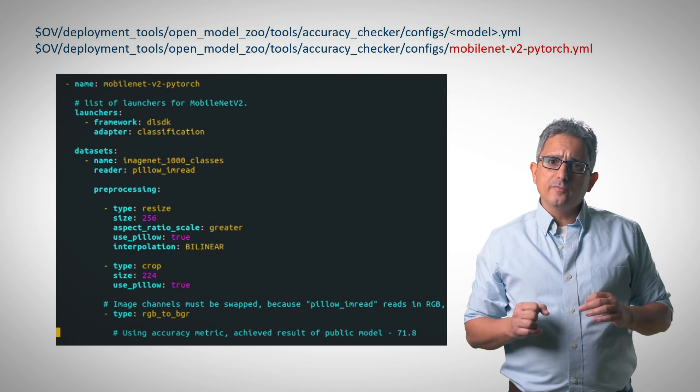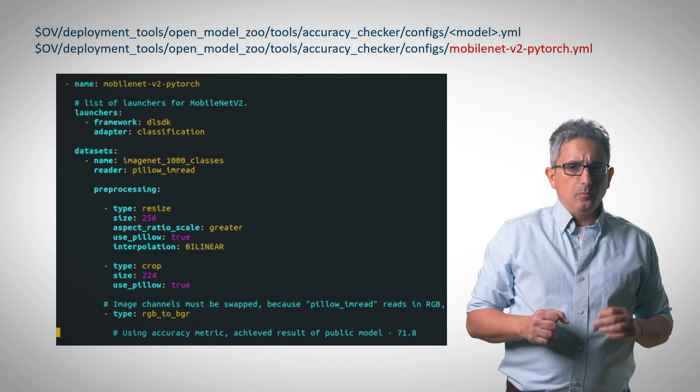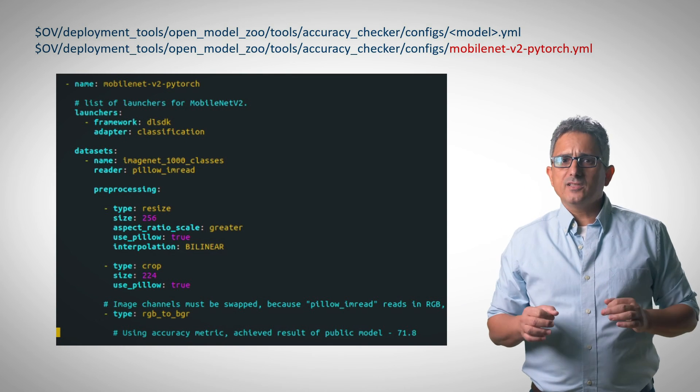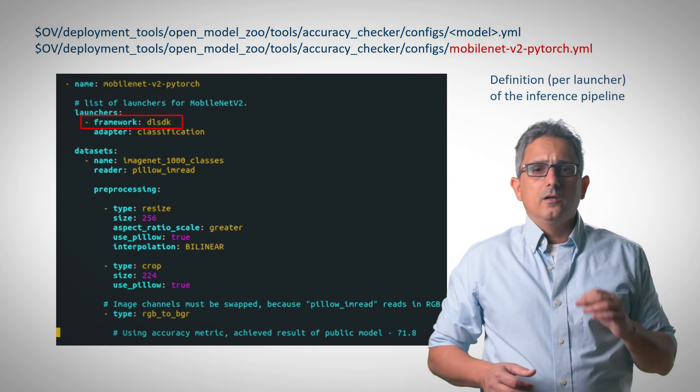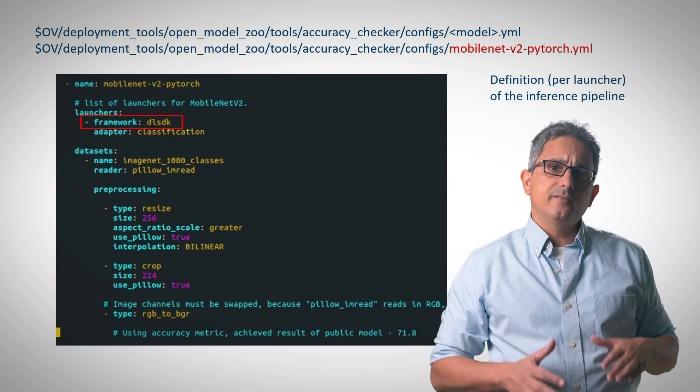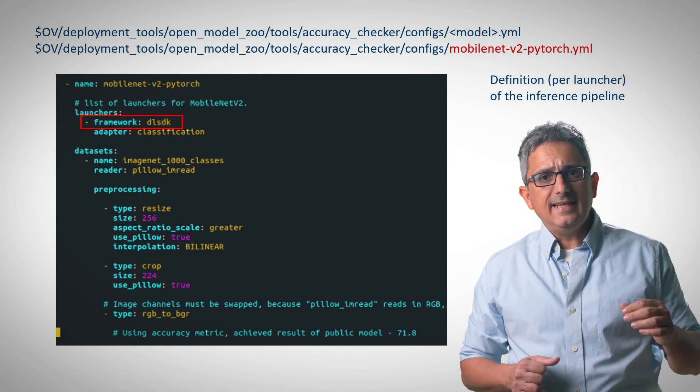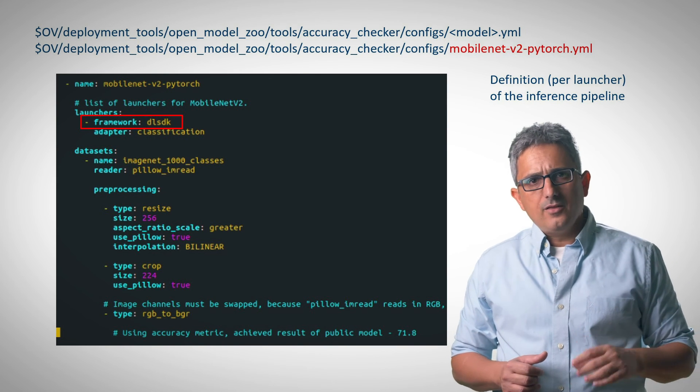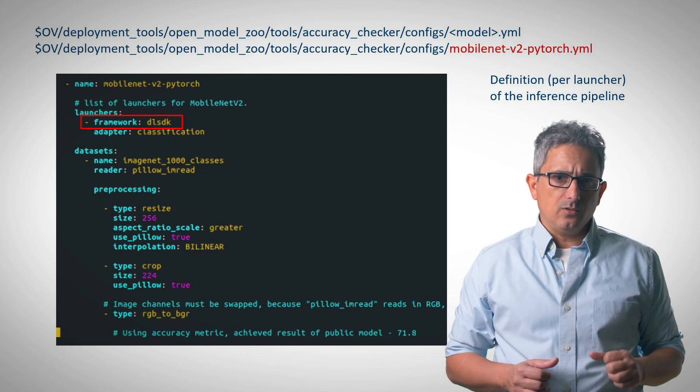The second important configuration file is the model.yaml file and it defines the inference pipeline per launcher. For example, here you can see that the framework, the launcher is DLSdk, meaning OpenVINO. And you can see the details of the dataset, the preprocessing and so on.